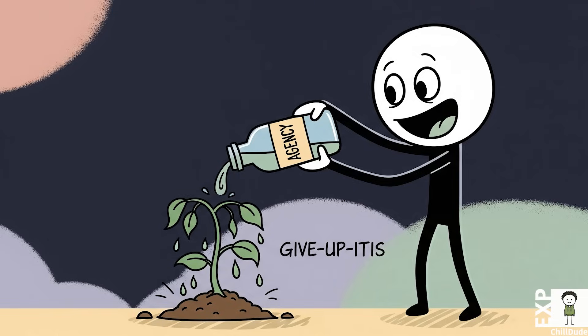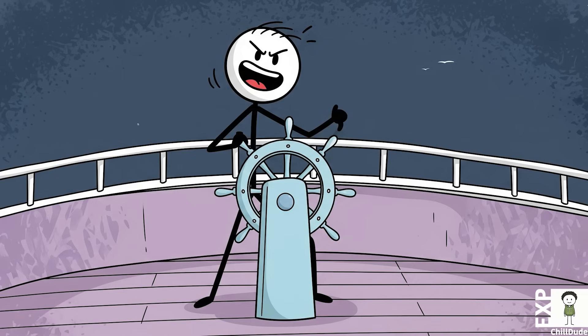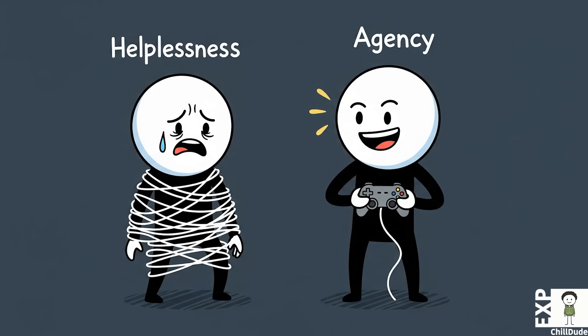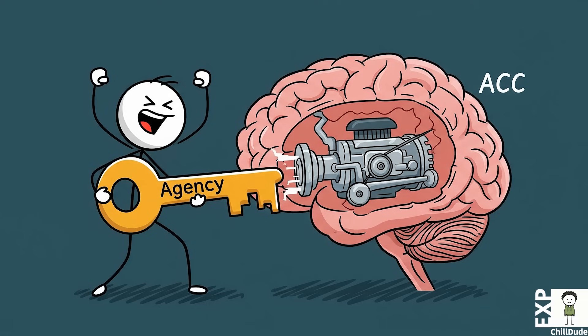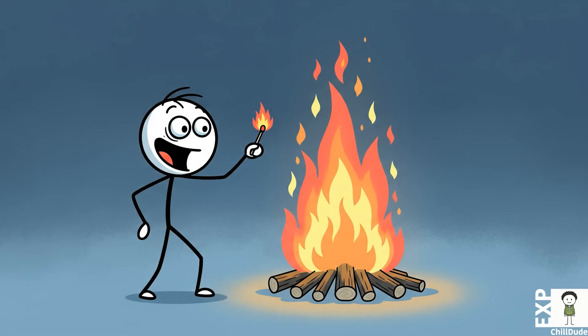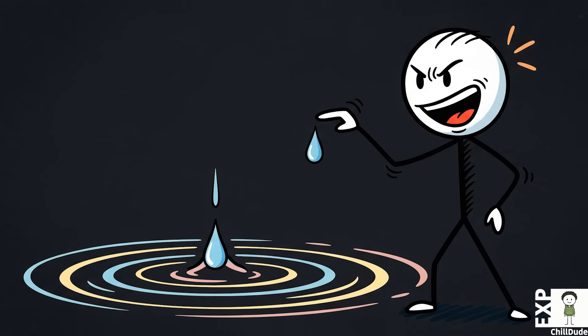The antidote to the fatal slide of give-up-itis is as simple in concept as it is powerful in practice: restoring a sense of agency. Agency is the belief that you have control over your own actions and their consequences. It is the opposite of helplessness. Leach and other survival psychologists emphasize that reversing the process, especially in the early stages of social withdrawal and apathy, is achievable. The key is to re-engage the anterior cingulate cortex. This doesn't require a grand, life-altering event. It can be sparked by the smallest assertion of control.